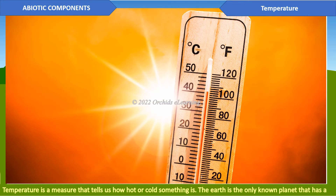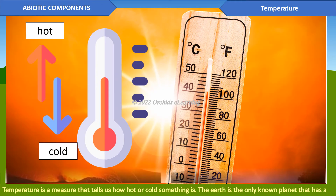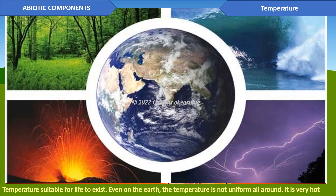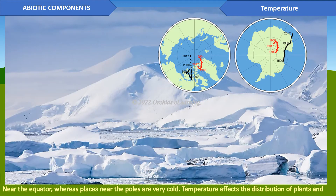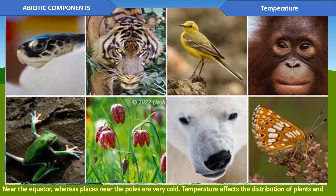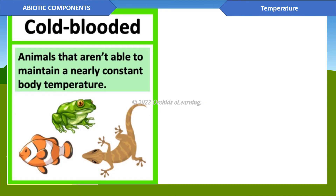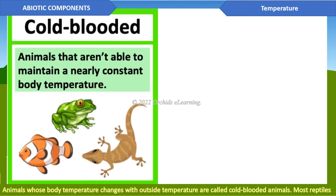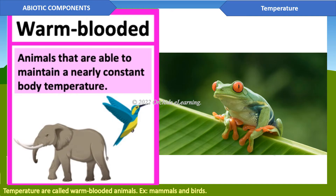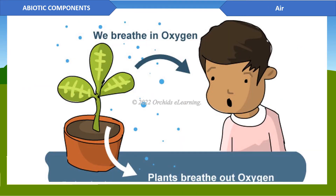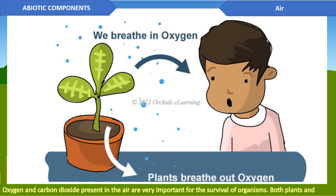Temperature is a measure that tells us how hot or cold something is. The Earth is the only known planet that has a temperature suitable for life to exist. Even on Earth, the temperature is not uniform — it is very hot near the equator, whereas places near the poles are very cold. Temperature affects the distribution of plants and animals around the planet. Animals whose body temperature changes with outside temperature are called cold-blooded animals; most reptiles, insects, and amphibians are cold-blooded. Animals whose body temperature does not change with outside temperature are called warm-blooded animals; mammals and birds are warm-blooded.